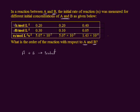Consider the order of reaction with respect to reactant A is X and with respect to reactant B is Y. We apply the rate law to this equation. The rate law is the product of the reactant concentrations raised to their experimentally determined orders. So rate R equals K, the rate constant, multiplied by concentration of A raised to the power X, multiplied by concentration of B raised to the power Y. This is the rate law for the given equation.